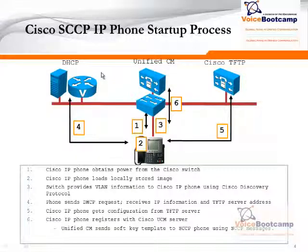A Cisco Skinny IP phone startup process goes through a series of steps before the phone can register. First, when the phone connects to a Cisco Catalyst switch on a Power over Ethernet switch, the switch provides power to the phone using the CDP protocol. Once the phone obtains power, it will try to load a locally stored image — every phone usually has a basic operating system running in firmware within its configuration.